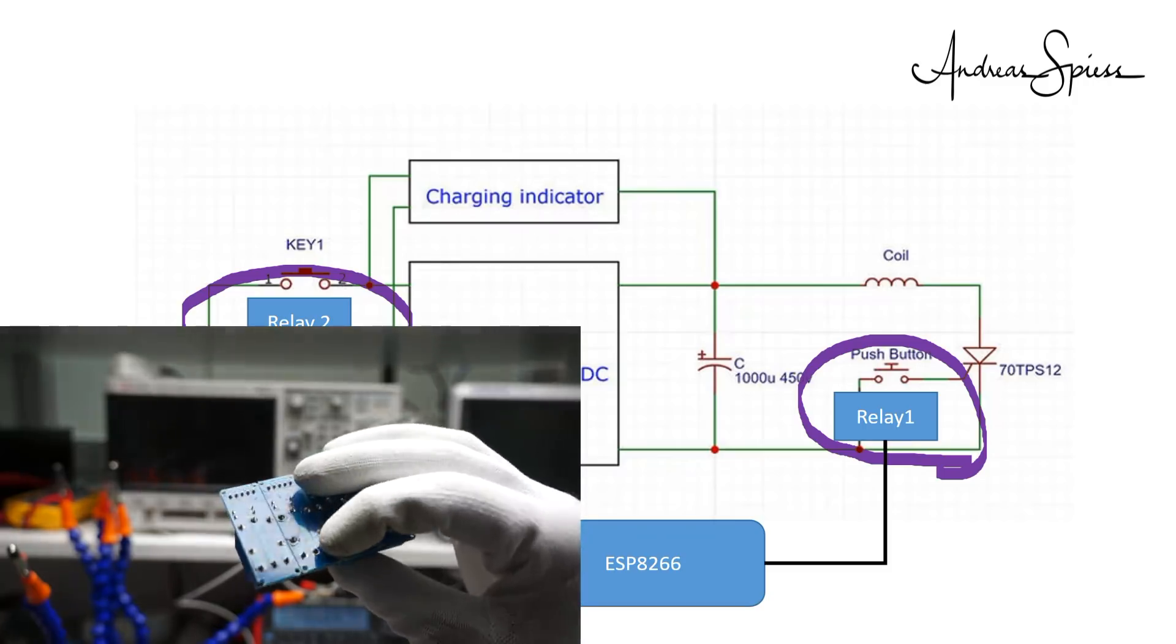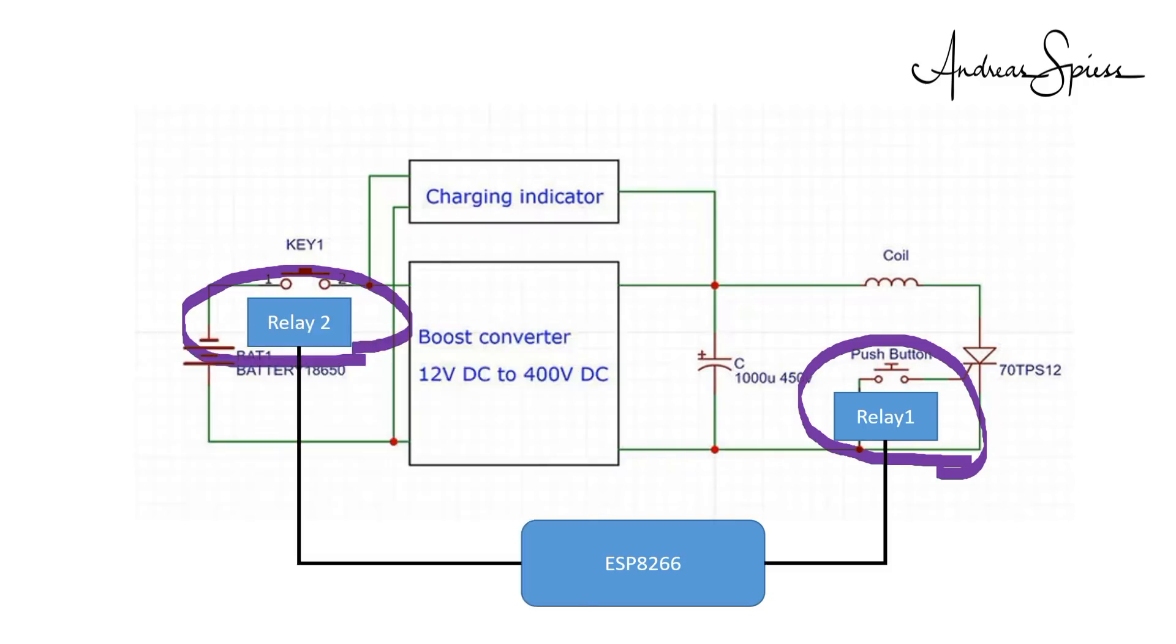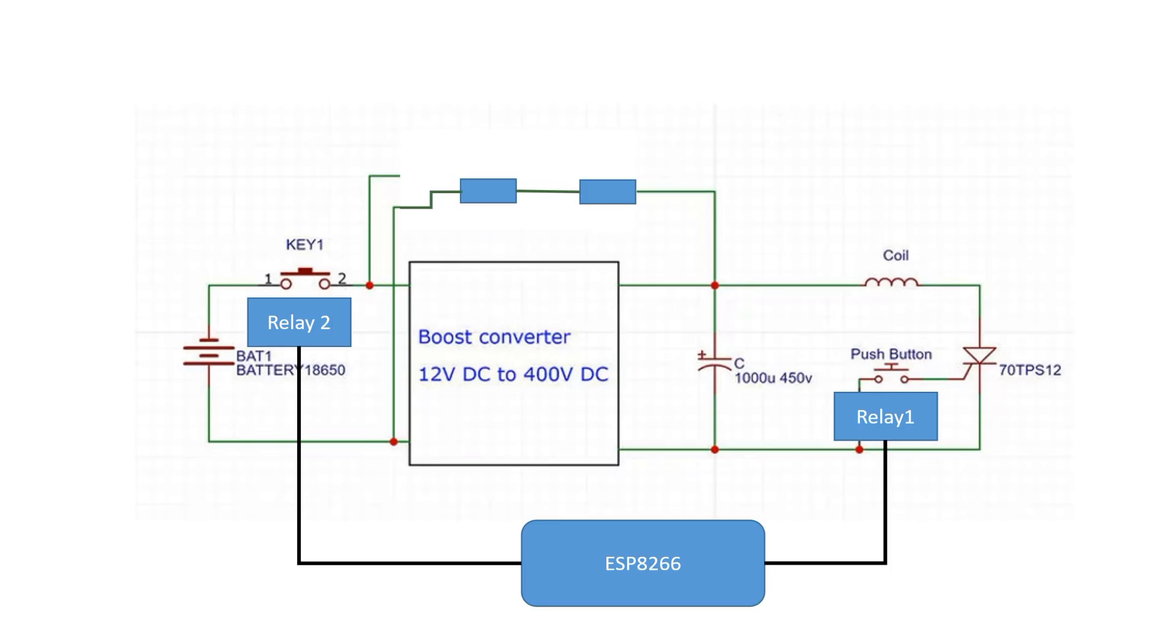The last step was to measure the voltage across the capacitor to decide if the gun is armed. How do you measure 400 volts with an ESP? You create a voltage divider. You can use the following formula. I did not need an exact result here, so I choose 410 kilo ohms and 810 ohms. Like that, the voltage should always be below 1 volt.